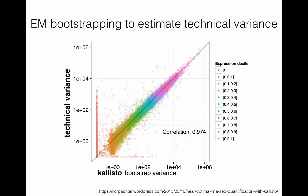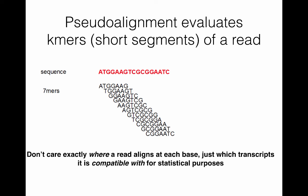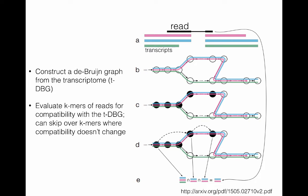So what is pseudo-alignment, and how is it different from the gapped or splice-aware alignment? Pseudo-alignment proceeds by evaluating k-mers of a read. K-mers are short segments that go down the read — I'm showing a sequence here in red, and then the 7-mers of that sequence. The key insight to pseudo-alignment is that you don't care where exactly a read aligns along a transcript, just which set of transcripts it may be compatible with for statistical purposes.